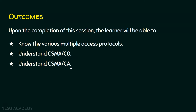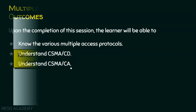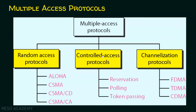We will start with the various multiple access protocols. There are basically random access protocols, controlled access protocols, and channelization protocols under multiple access protocols — also called media access protocols, since a common medium is accessed by many stations or nodes at the same time. We have already seen Aloha and CSMA in the last lectures, and now we will see CSMA/CD and CSMA/CA.